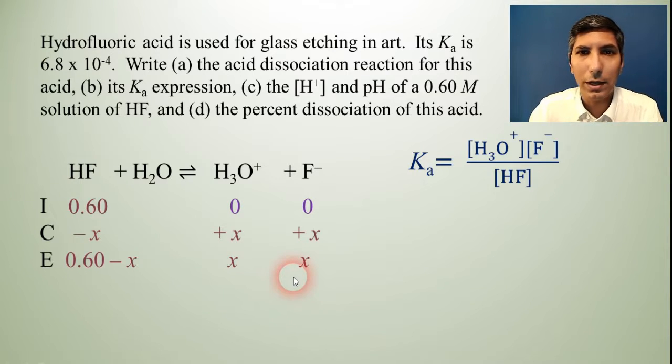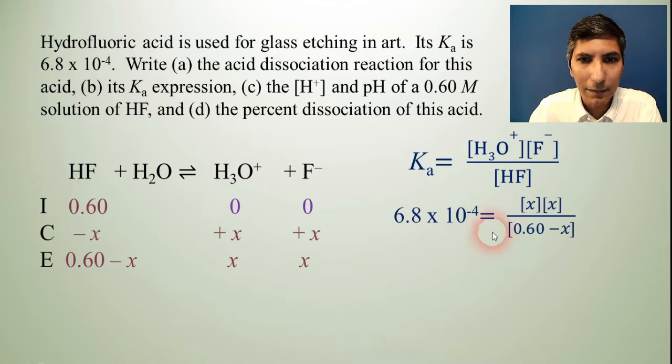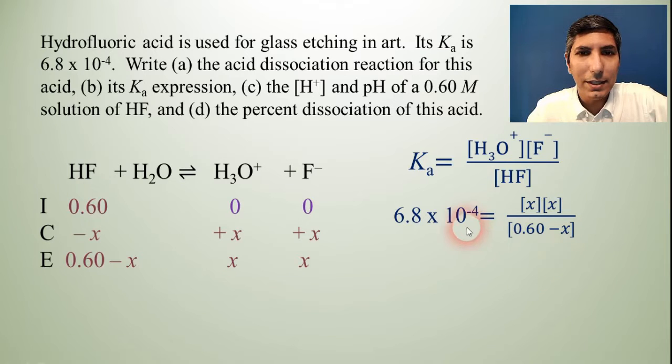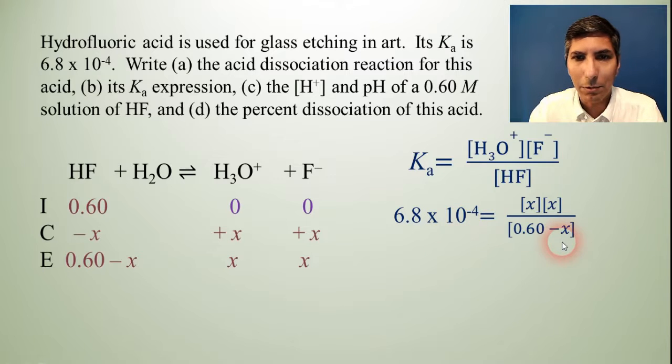So now we are ready to plug and chug into the equilibrium constant expression. The problem tells us that the Ka is 6.8 times 10 to the negative fourth. That's equal to X times X over 0.60 minus X. So we see that this is a fairly small equilibrium constant. Some folks might say this is a little bit on the bubble, 10 to the fourth, 10 to the fifth. Sometimes that's where it starts to get precarious as to whether we're going to be able to use the 5% rule. But let's go ahead and do that. We're going to ignore that minus X to make our math easier.